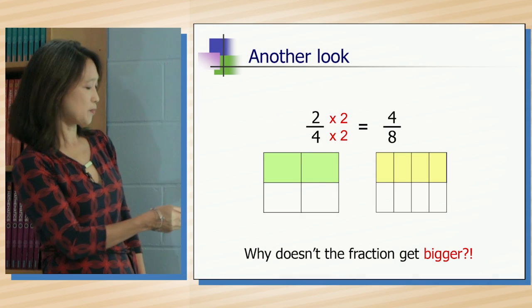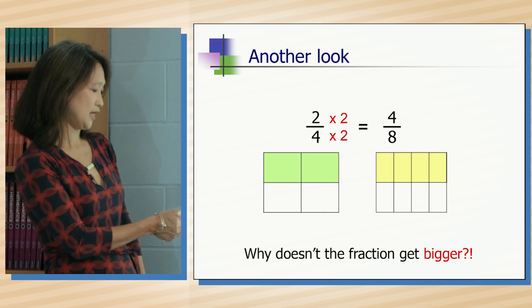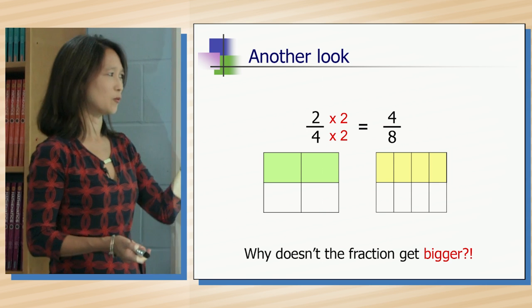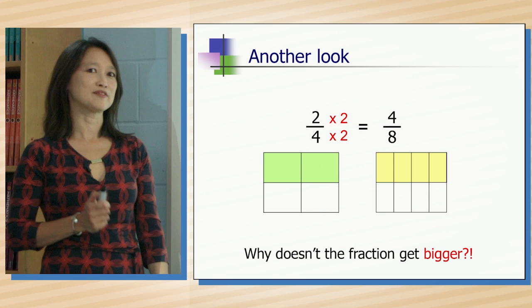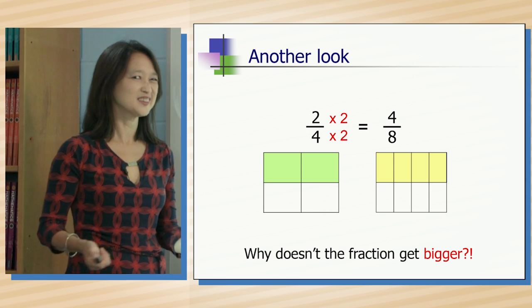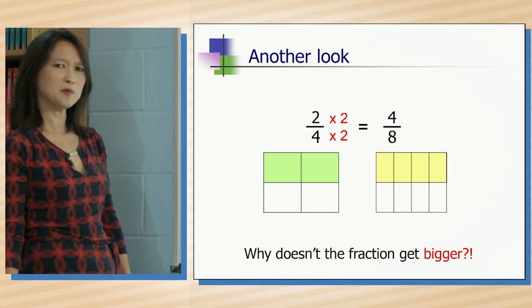We see a picture of what happens when two fourths becomes four eighths. But here's the question: Why doesn't the fraction get bigger? If you took a counting number like five and you doubled it, and then you doubled it again, would you still have five? No, it would get much bigger. So why does that work in fractions?